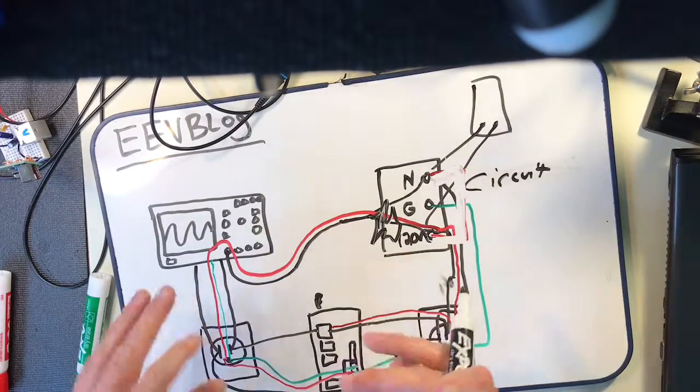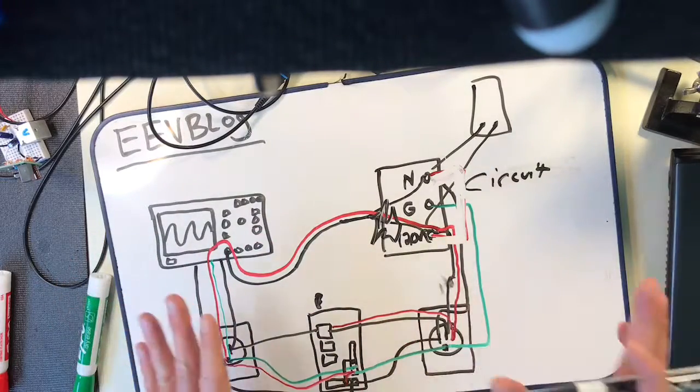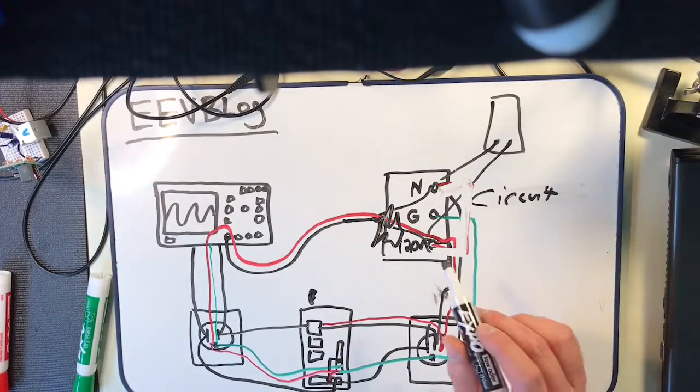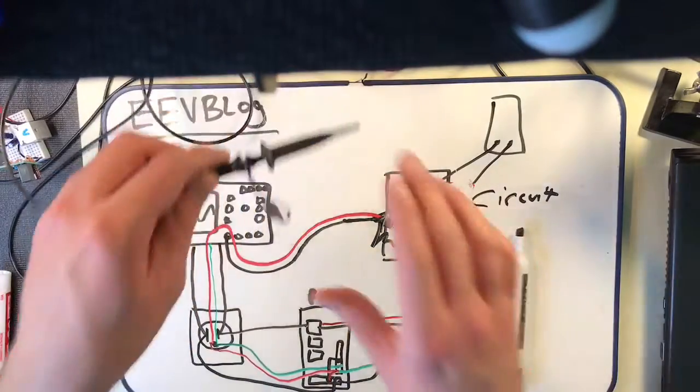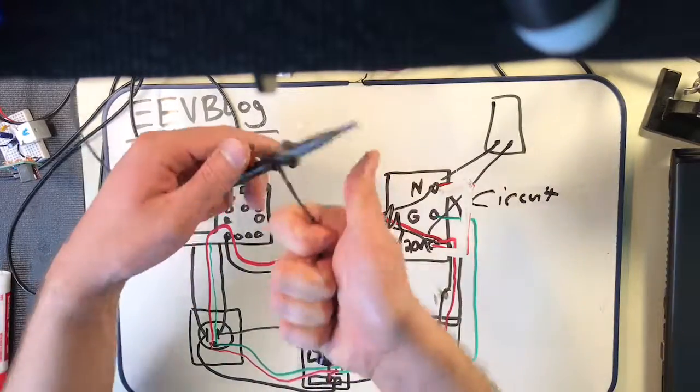Bad things will happen. It may damage the oscilloscope, it's not as likely because this stuff is beefier cable and usually rated for pretty high currents, whereas this little probe is not.